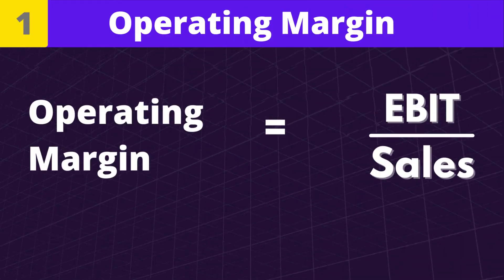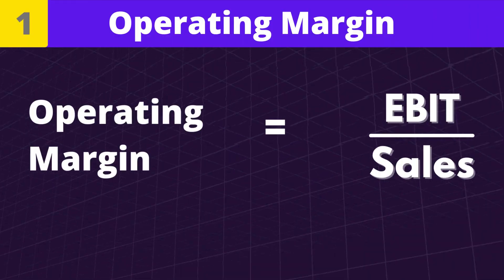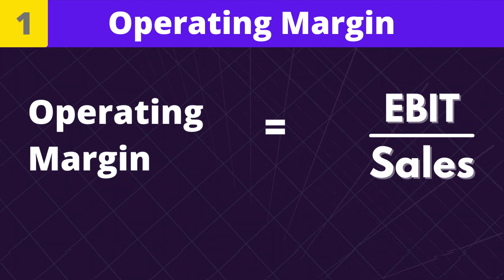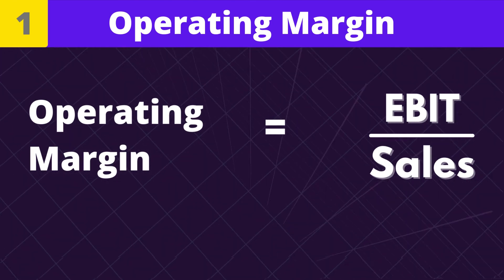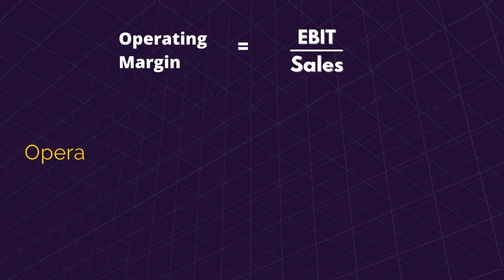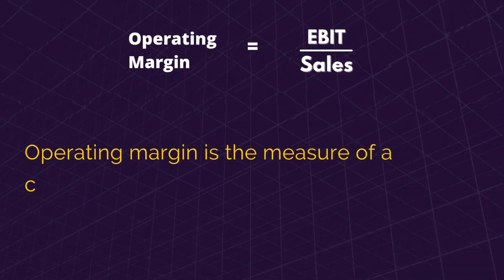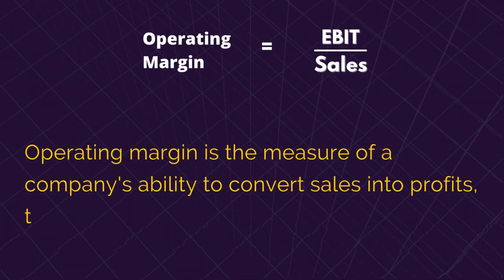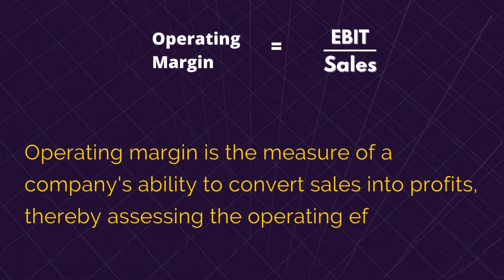Number 1: Operating Margin. Operating Margin is equal to earnings before interest and tax divided by sales. Operating margin is the measure of a company's ability to convert sales into profits, thereby assessing the operating efficiency.